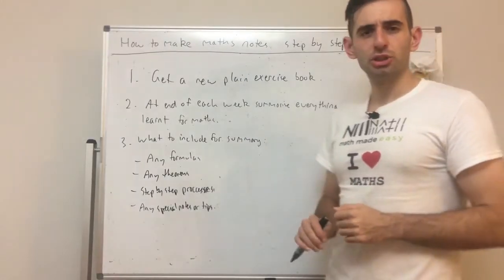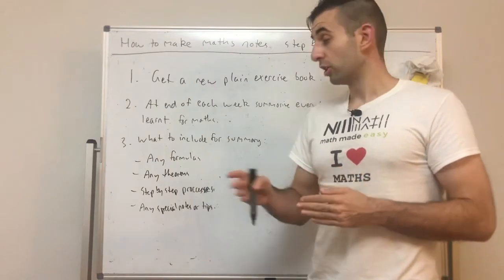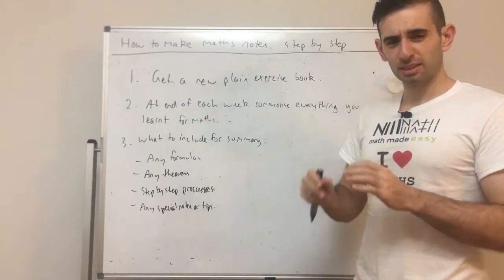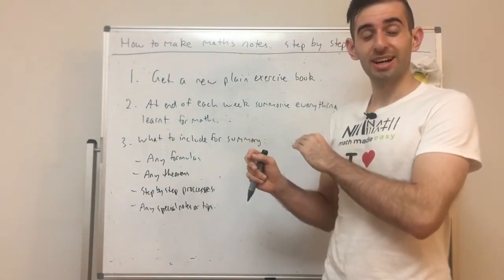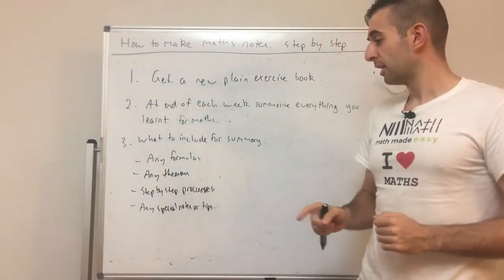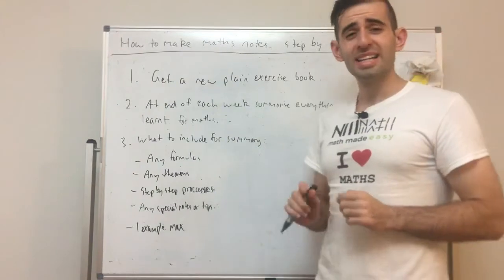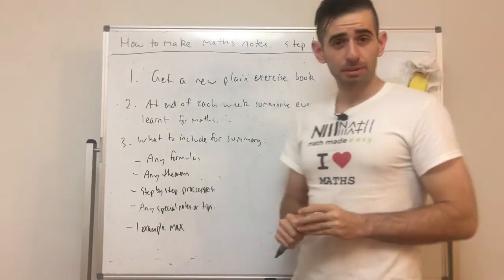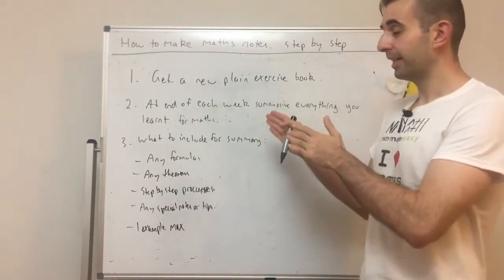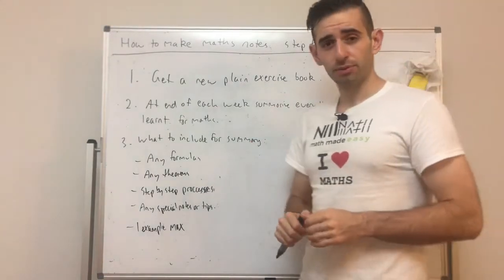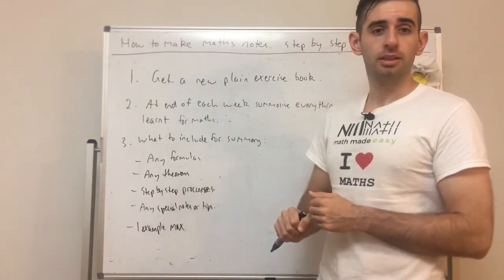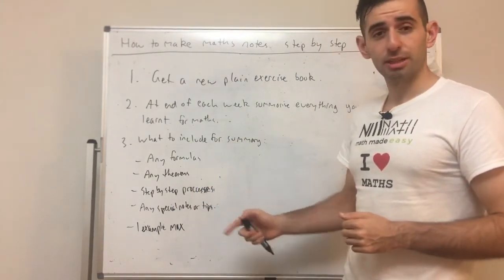Then what's next? Any special notes or tips. These are separate to step-by-step processes - sometimes there's going to be some special tips or notes on the side that will help you. One more thing we need: one example max. We're doing a summary book here, so we want it nice and concise. When you're doing a particular topic, one example for that. It's great because you have a step-by-step process and one example showcasing how that works.